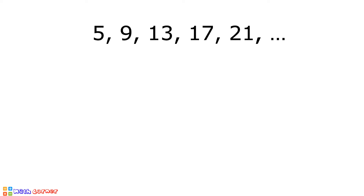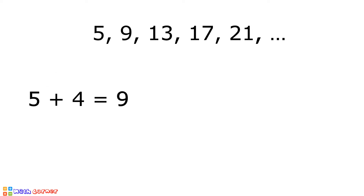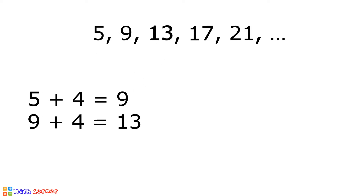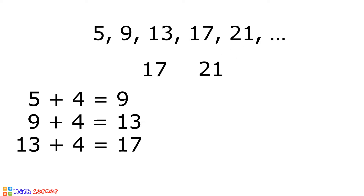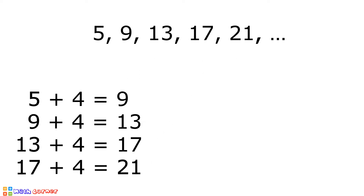After the first term, to determine the next term, we have to add 4. 5 plus 4 is equal to 9. 9 plus 4 is equal to 13. 13 plus 4 is equal to 17. And 17 plus 4 is equal to 21. There is a constant number to be added to each term to determine the next term, and that constant number is the common difference.